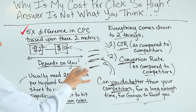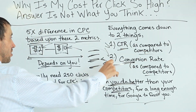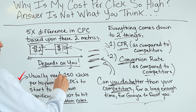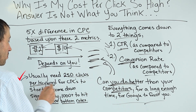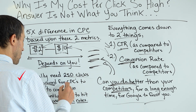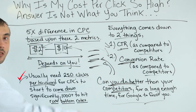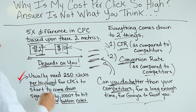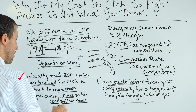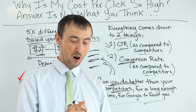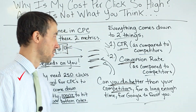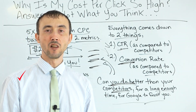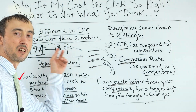Assuming you have the right ad and the right landing page to get the higher click-through rate and higher conversion rate than your competition, you're going to need 250 clicks on every one of your keywords for that cost per click to start coming down. And realistically, for you to hit rock bottom rates, you're going to need 1,000 clicks or more on every single keyword. So if you target 50 keywords, you're going to need 50,000 clicks for your ten-dollar cost per click to come down to two dollars.